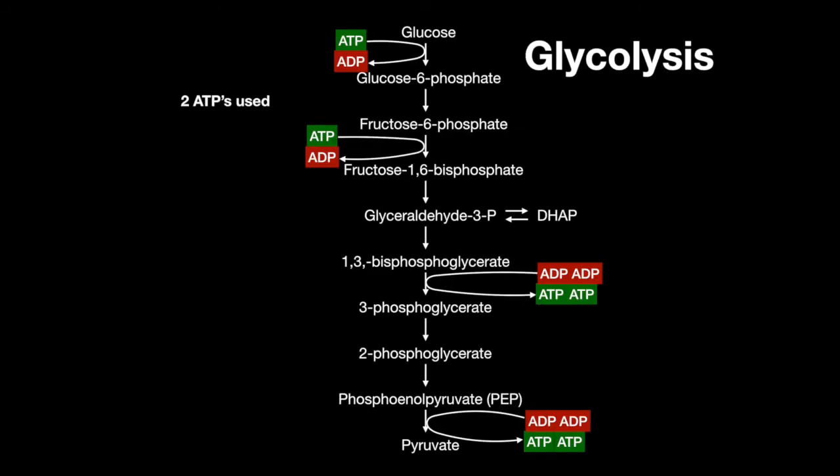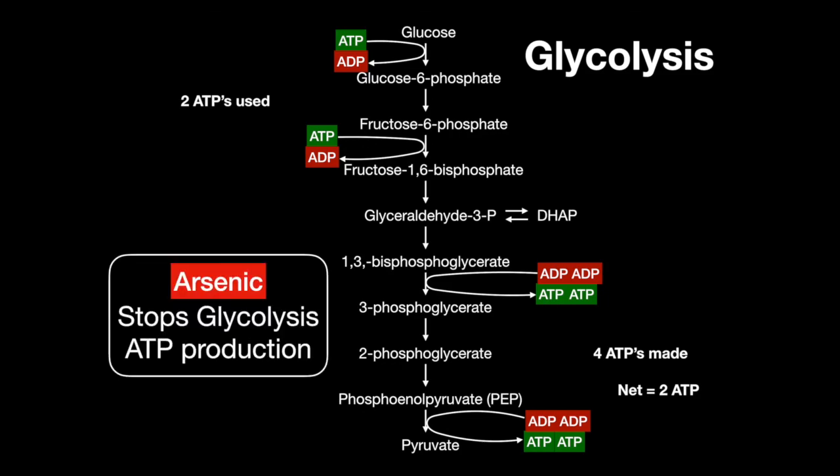Focusing strictly on glycolysis, two net ATPs are produced per glucose. The toxin arsenic prevents any ATP from being produced during glycolysis.